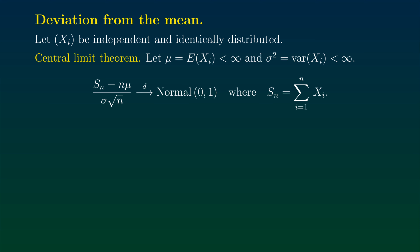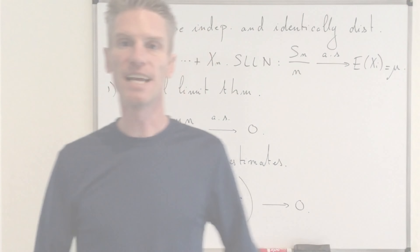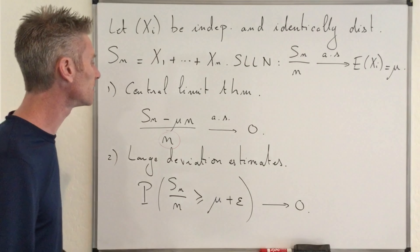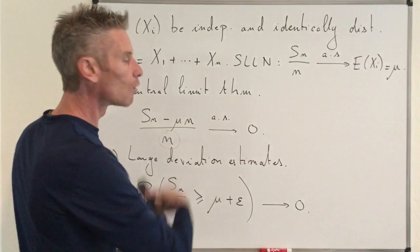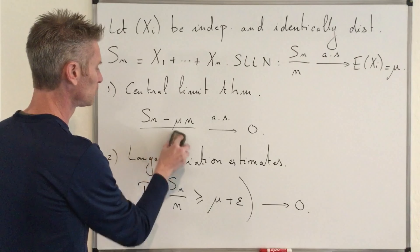The central limit theorem tells us that the natural rescaling we are looking for is in fact equal to square root of n. By dividing Sn minus its mean by square root of n, we are going to have a non-degenerate limit. More precisely, if we assume that in addition to having a finite mean, those random variables Xi also have a finite variance sigma squared, then by dividing Sn minus n·mu by sigma times square root of n, we have convergence in distribution to the normal random variable with mean zero and variance one. That gives us the answer to our first question: the natural rescaling here should be square root of n.